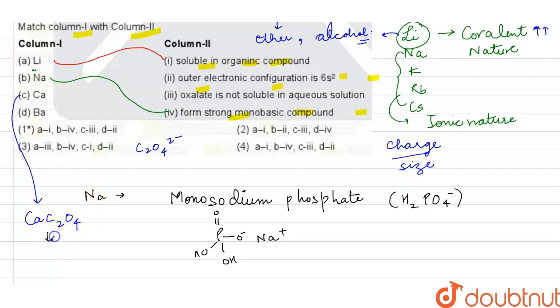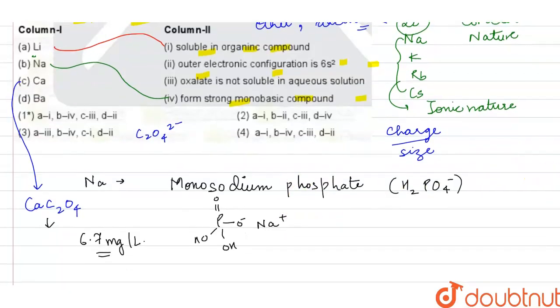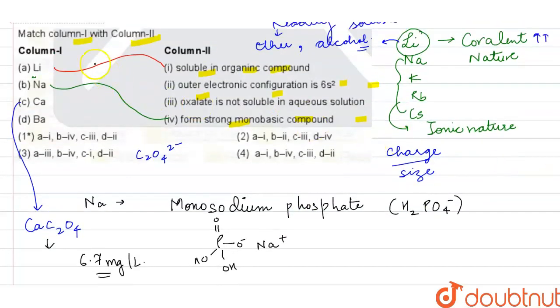Because the solubility of calcium oxalate is almost about 6.7 mg per liter, you can see that it is even less than 1 gram per liter, so this is almost insoluble. Calcium oxalate is one of the major components of kidney stones. So the correct answer for calcium is that the oxalate is not soluble in aqueous solution.